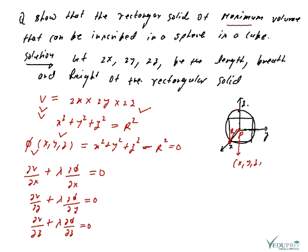What is lambda? Lambda is any unknown parameter — it is called the Lagrange multiplier. Now we need to find the values of ∂V/∂x, ∂φ/∂x, ∂V/∂y, ∂φ/∂y, ∂V/∂z, and ∂φ/∂z.